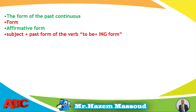Let's start with the form of the past continuous. First, the affirmative form: subject plus the past form of the verb 'to be'. The verb 'to be' means am, is, are — this is in present — and in the past form it will be 'was' or 'were', plus the -ing form. The -ing form means I add -ing to the base verb.